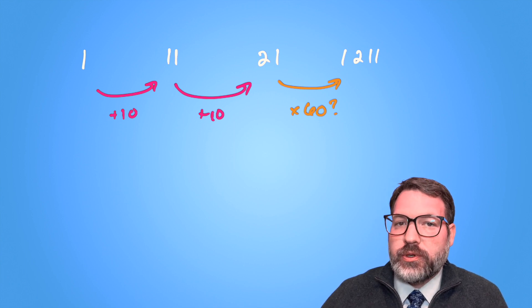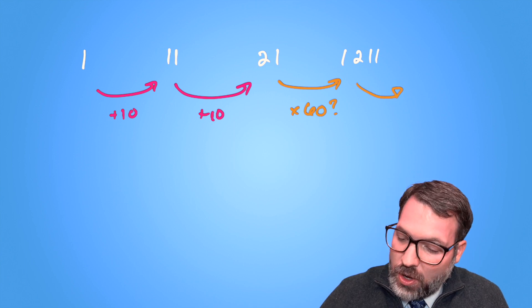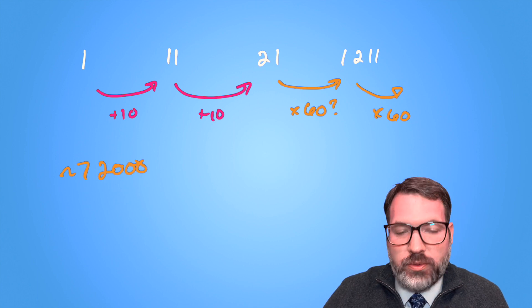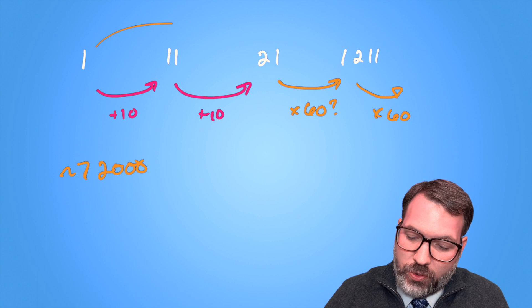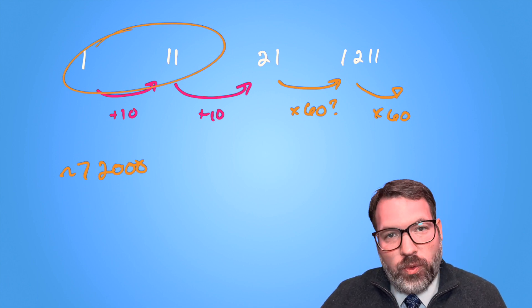To get from 21 to 1,211, you might think, well, we're multiplying by roughly 60. So could we multiply by another 60 to get something around 72,000 for the next term in this sequence? And you certainly could, though of course you would not have multiplied by 60 to get from 1 to 11 to 21 in the first place.